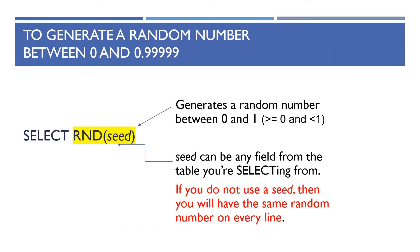To generate a random number between 0 and 0.9999 you use: SELECT RND(seed). The seed tells SQL where to start the random number generation. If you don't include a seed you'll keep getting the same random number for all records. Don't type the word 'seed' — instead use one of the field names from the table you're selecting from as the seed value.